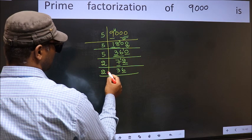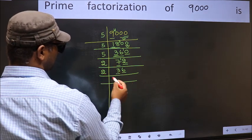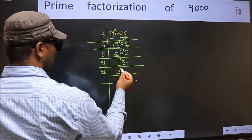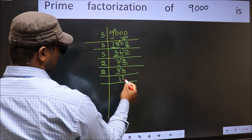Even, so take 2. First number 3. A number close to 3 in 2 table is 2 times 1 is 2. 3 minus 2, 1. 1 carried forward, 16. When do we get 16 in 2 table? 2 times 8 is 16.